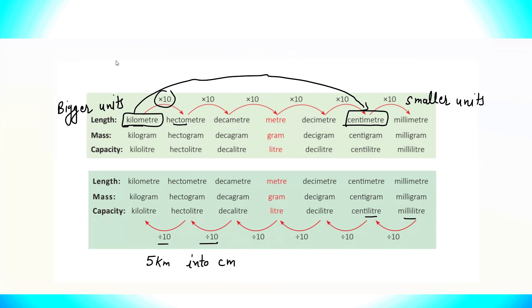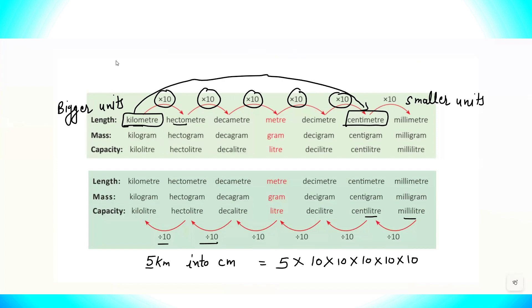I make an arrow from kilometer to centimeter and count how many tens are in that arc — there are five. So I write five times 10 × 10 × 10 × 10 × 10, which means five tens. That gives five followed by five zeros — five hundred thousand — so five kilometers equals 500,000 centimeters.